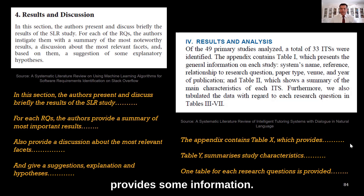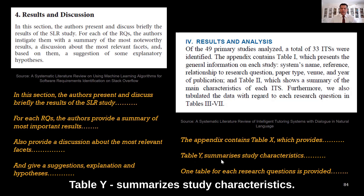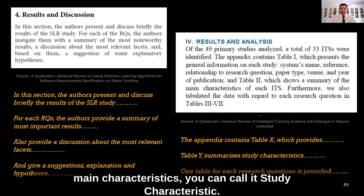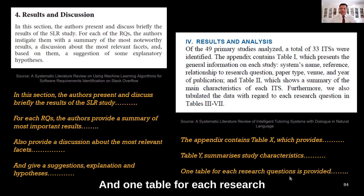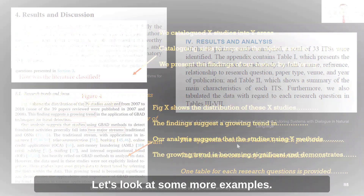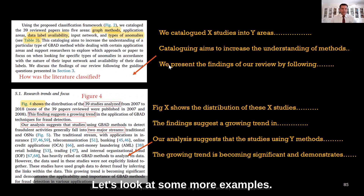You can write: 'The appendix contains Table X which provides some information; Table Y summarizes study characteristics.' One table for each research question is provided in this section. This kind of phrasing is very clear, crisp, and to the point.